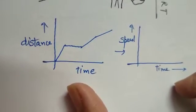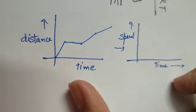If the distance-time graph is given, then how do we change it to a speed-time graph?